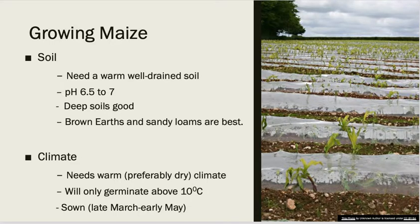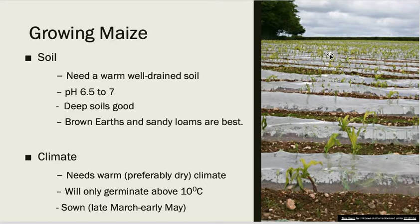Now let's look at cultivation. Maize requires a warm, well-drained soil with a fairly high pH of 6.5 to 7. A deep soil is good for maize, and maize is actually beneficial for the soil as well — its roots go deep, which has a good effect on soil structure. Putting that together, you're looking at brown earths and sandy loams, with the sandy loam providing good drainage. Both soil types have a slightly higher pH and are not acidic. For climate, maize needs a warmer, drier climate than we typically have in Ireland, but it does relatively well here. It will only germinate above 10 degrees Celsius, meaning typical sowing dates are between late March and early May depending on the weather.